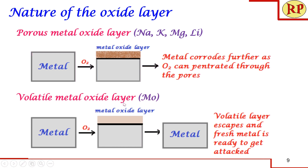Next is the volatile metal oxide layer — this is even more dangerous than the porous metal oxide layer. Molybdenum, for example, when it comes in contact with oxygen, forms a molybdenum oxide layer which is very volatile, meaning it evaporates. When this metal oxide layer evaporates, the metal beneath is freshly exposed and available to undergo further corrosion by reacting with atmospheric oxygen. This type of corrosion is very drastic, and in very little time the metal totally undergoes corrosion.